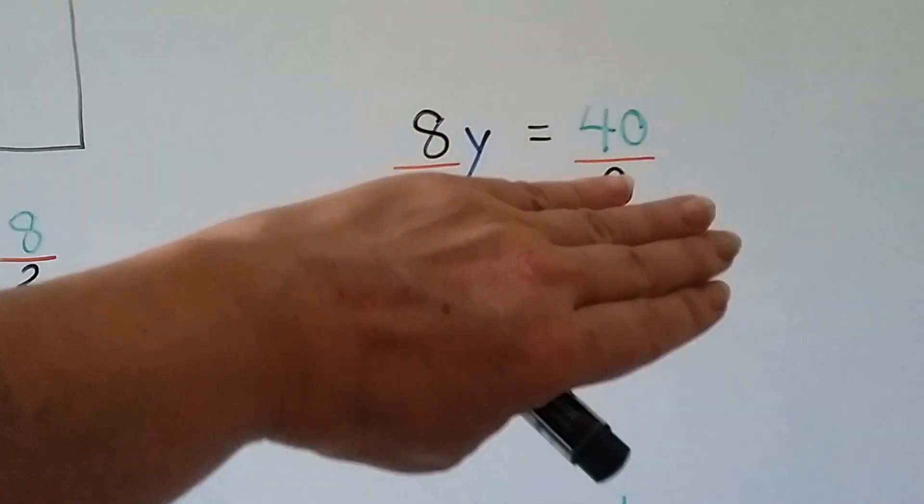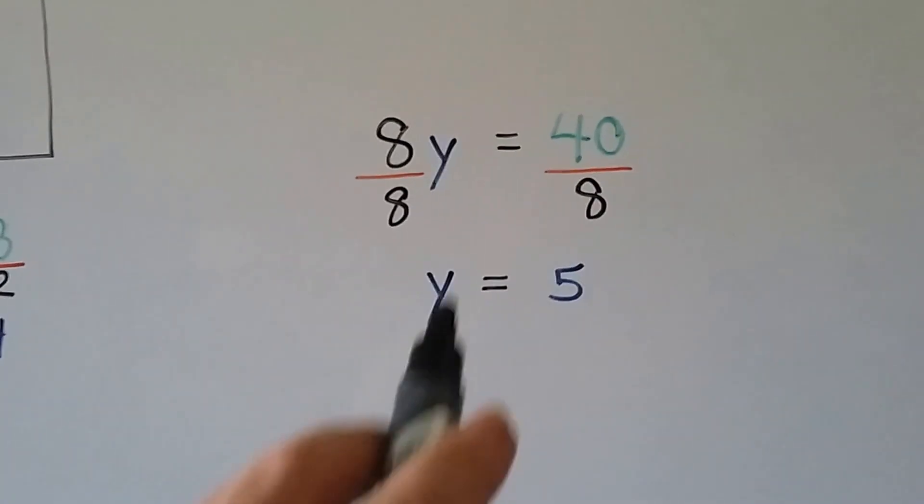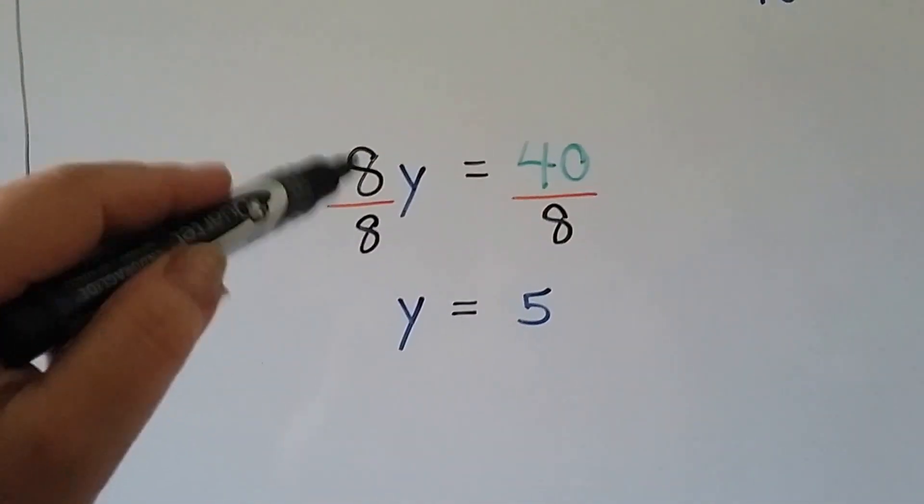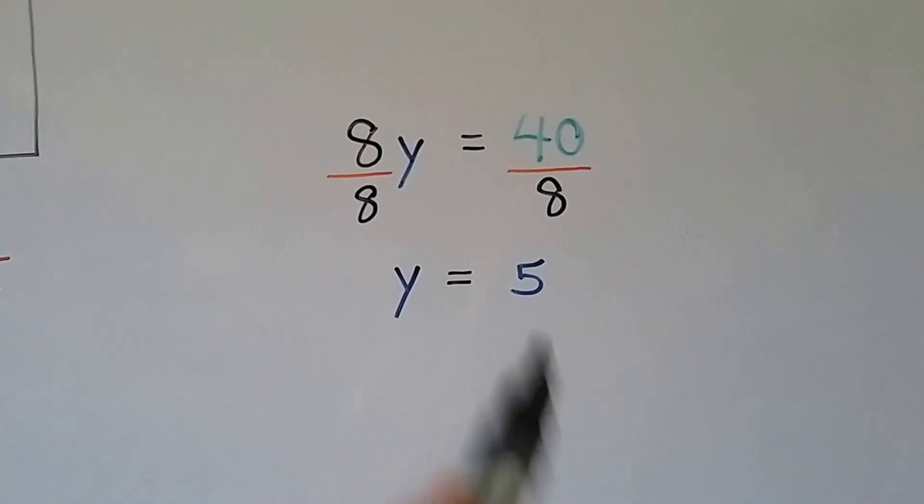We have 8y equals 40. We divide both sides of the equation by this 8. We get 1y equals 5.